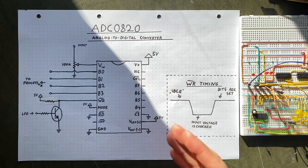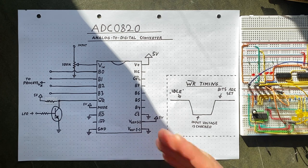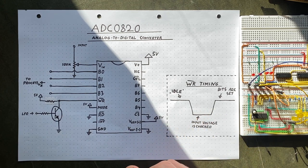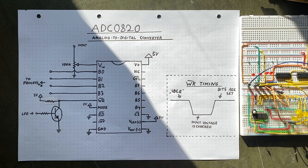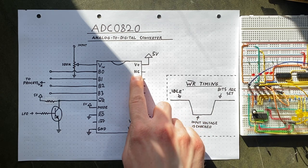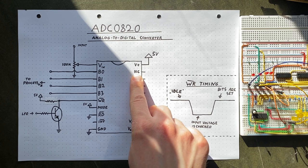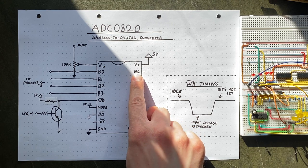We can also ignore the overflow output. This is used to show that the chip's input is too big to be represented with 8 bits. Since we are working with a 4-bit system, we won't be running into that problem. And here's another pin that we can ignore. It should be self-explanatory because its name is no connection.